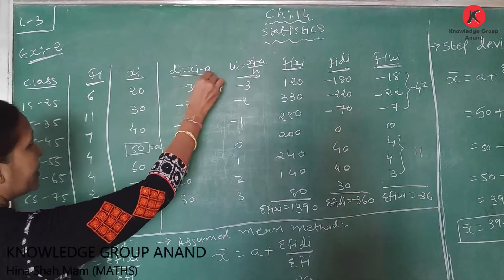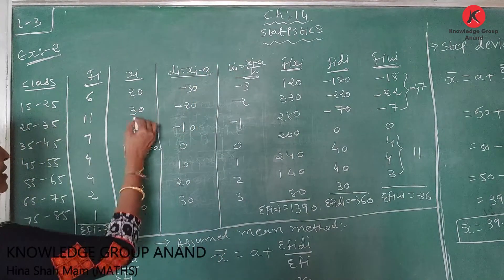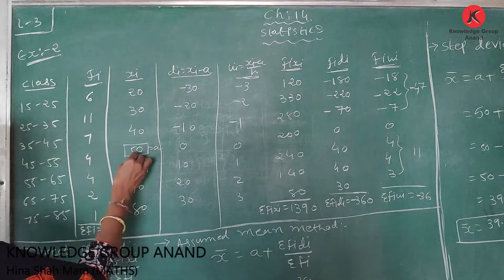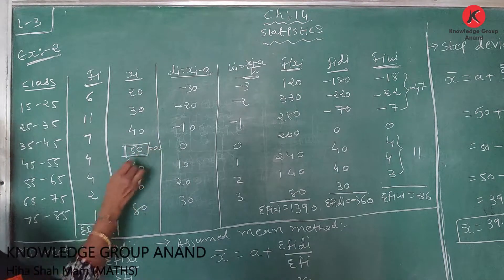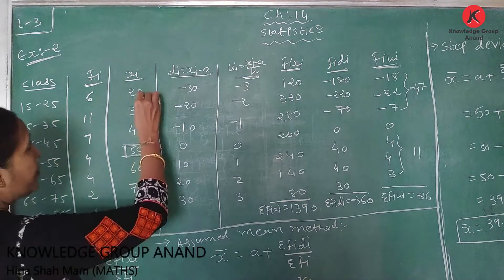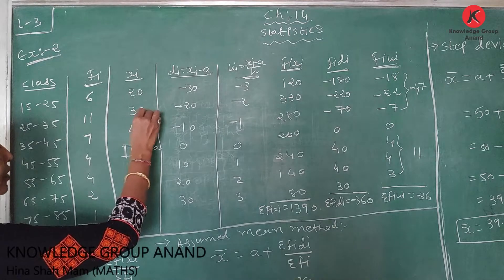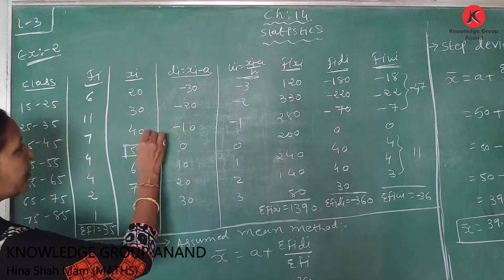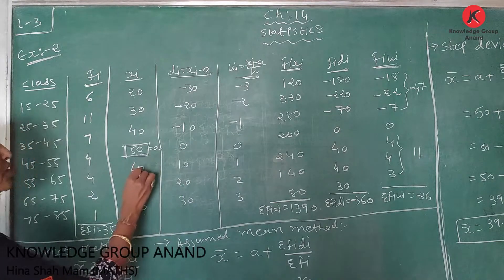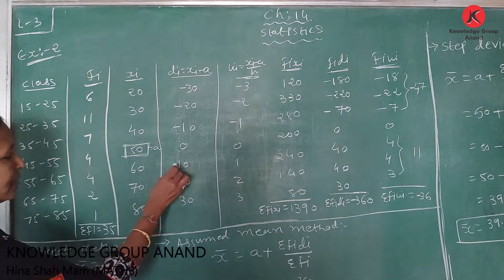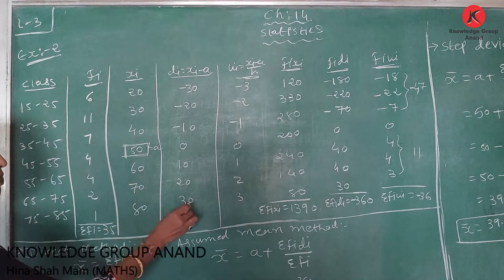Now find di = xi - a. We assume the central xi value, a = 50. So: 20-50 = -30, 30-50 = -20, 40-50 = -10, 50-50 = 0, 60-50 = 10, 70-50 = 20, and 80-50 = 30.